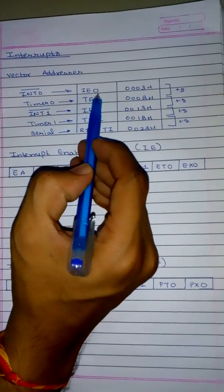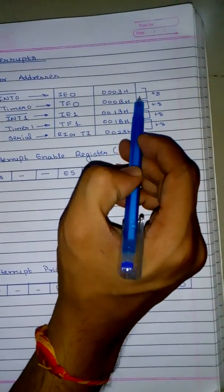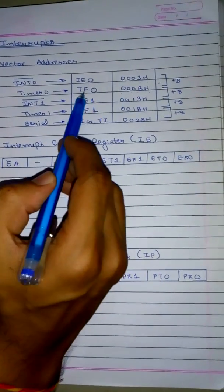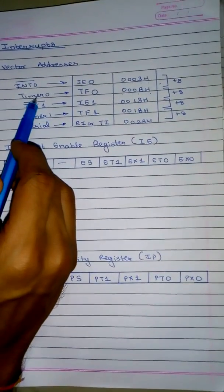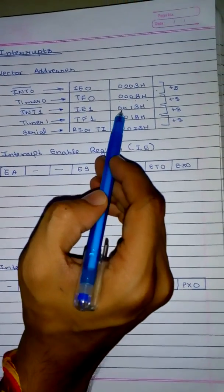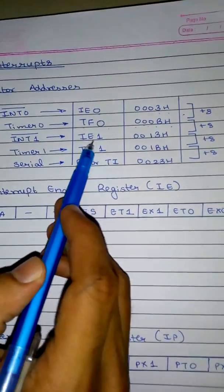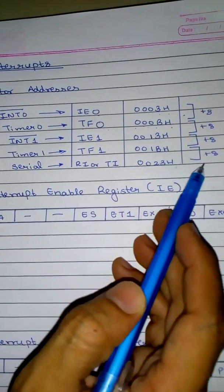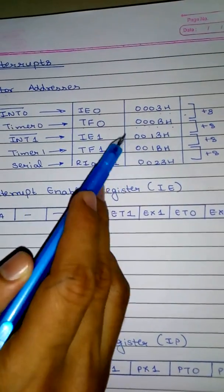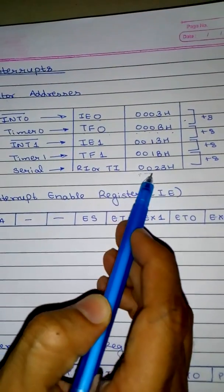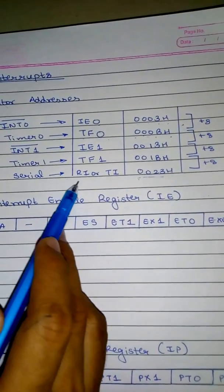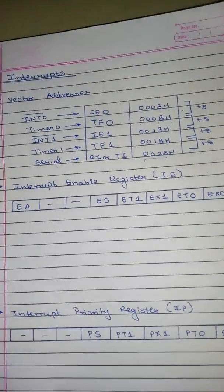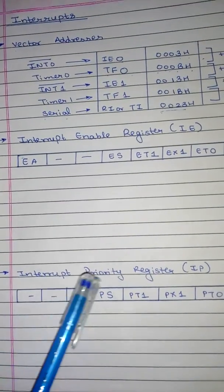INT0 bar, written as IE0, has the vector address 0003H. If you add eight to it, you go to 000BH — that is the vector address of TF0, or Timer 0. Add eight again and you move to 0013H — that is IE1, or Interrupt 1 bar. Add eight to get 001BH — that is TF1, or Timer 1. And finally, adding eight gives you 0023H — that is RI or TI, the receiver/transmitter, which is basically serial.